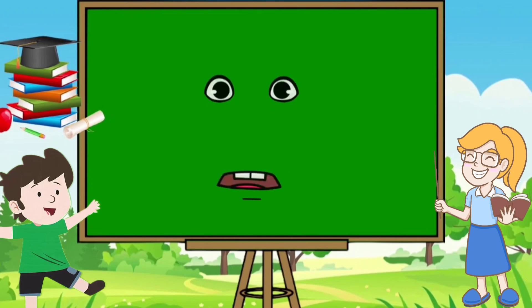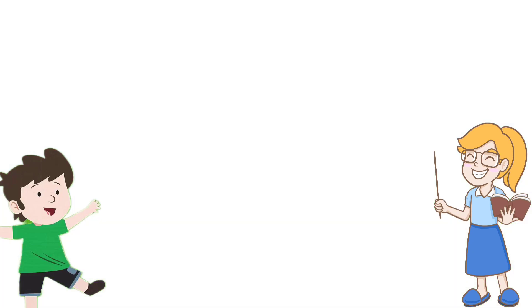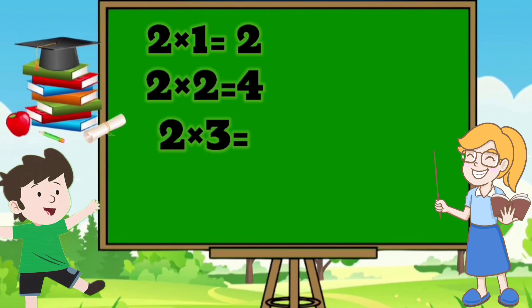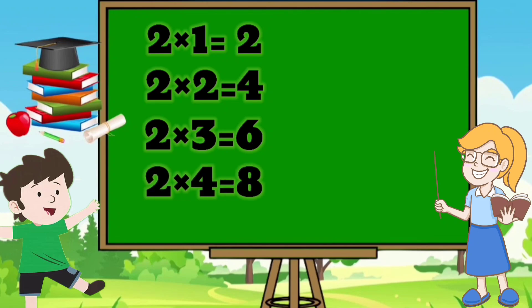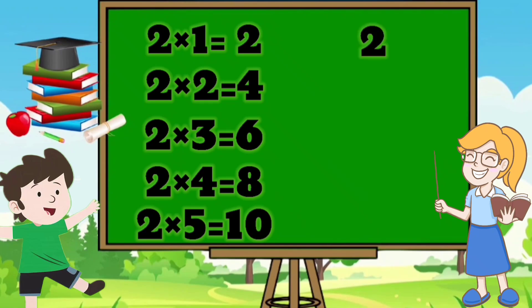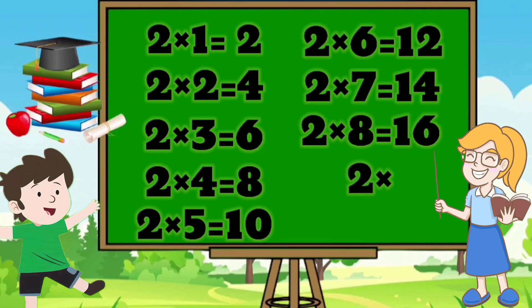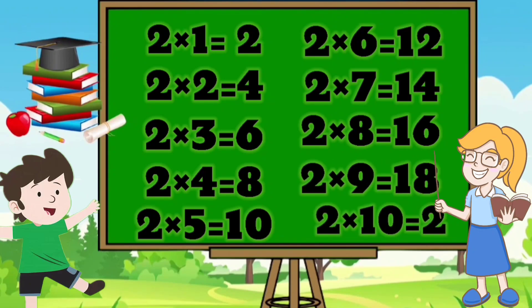चलिए बच्चों एक बाद फिर से दोर आते हैं। 2, 1, 2, 2, 4, 3, 6, 4, 8, 5, 10, 6, 12, 7, 14, 8, 16, 9, 18, 10, 20.